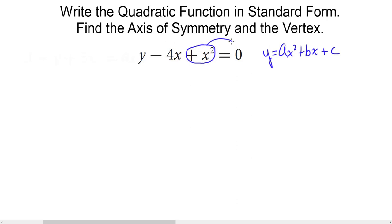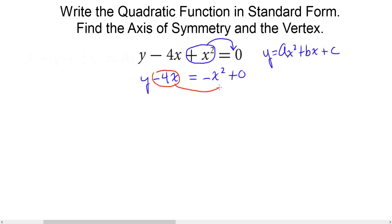I'm going to drag it over to that side, and when I do that, it has to change signs. So now we have y minus 4x equals negative x squared. Next, we move the negative 4x over, and it becomes positive 4x. So now our equation reads y equals negative x squared plus 4x plus zero. Our equation is now in standard form, where a equals negative 1, b equals 4, and c equals zero.